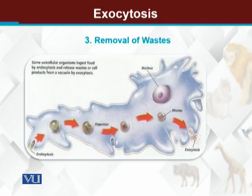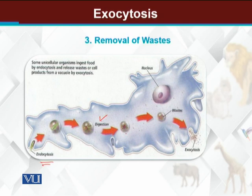This process is exocytosis. Looking at this diagram very clearly: starting from the entry point, the food particle is brought into the cell through endocytosis. After that, digestion takes place. After digestion, useful substances are absorbed, while the waste material is expelled from the cell through exocytosis.